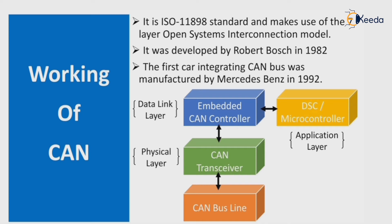The CAN architecture includes a CAN bus line connected to a CAN transceiver. The transceiver is included in the physical layer of the ISO model. It is a physical device connected to an embedded CAN controller, which represents the data link layer.